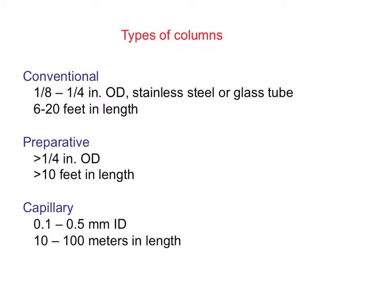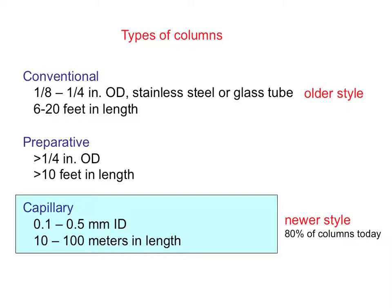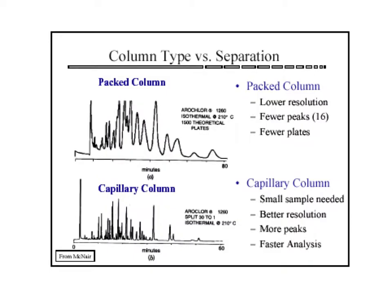Other than the preparative columns, which are used to separate large samples, there are two types of columns in common use. The conventional or packed column is an older style column. Capillary columns give much better separation and are found in most higher-end instruments. This slide shows the difference in separation between the two types of columns. Note that the packed column leads to broader, overlapping peaks. Two compounds that elute close together may be mistaken for a single compound and appear as one broad peak. The capillary column has resolved the mixture into many more clearly defined components.